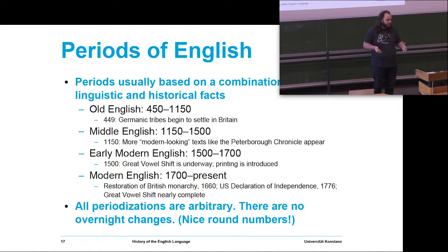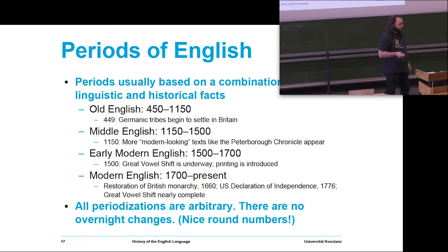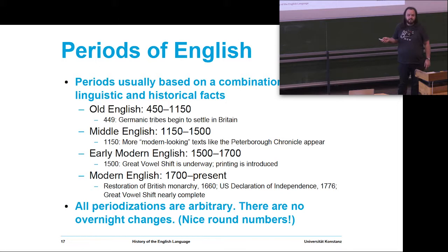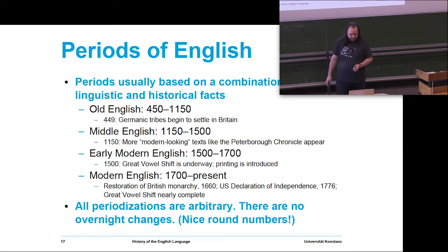The word English comes from 'Angles' — the Angles spoke 'Anglish,' or as it later became through sound change, 'English.' Old English is spoken up to about 1150, though this boundary is rather fluid — sometimes people date the end of the Old English period a little earlier, somewhere between 1050 and 1150. Middle English begins at that point, and the texts look really quite different linguistically. When we get to the Peterborough Chronicle, we can start calling these texts Middle English, and Middle English goes on until about 1500.